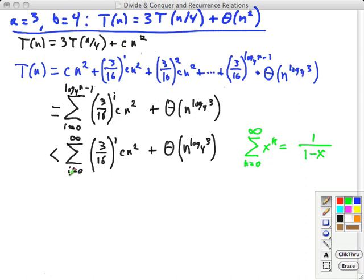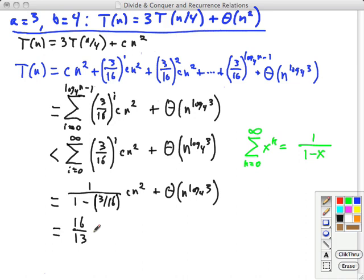I have a sticker in the back of my book. I'm always referring back to these formulas, and you probably should do the same. So this is for the infinite geometric series. The formula says, if we go from k to infinity, sum x to the k, then that's equal to 1 over 1 minus x. So what is what here? Well, instead of k, we've got i. x to the k, what's x? Well, x is 3 sixteenths. So if we just plug in, this says we want 1 over 1 minus 3 sixteenths. Okay? So we've gotten rid of the summation. And that simplifies to, well, 1 minus 3 sixteenths. Of course, it's 13 sixteenths, but it's 1 over 13 sixteenths. So let's flip it. It's just 16 thirteenths Cn squared plus theta n log base 4 of 3.